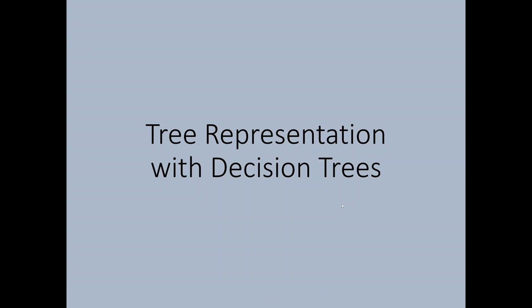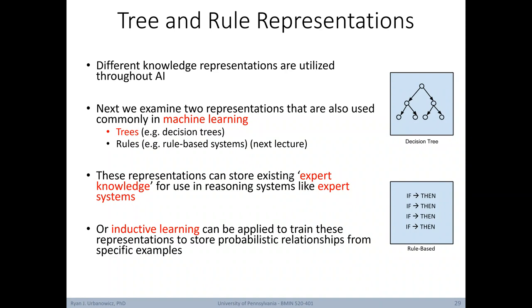Now we're going to leave semantic webs behind and talk about tree representations with decision trees. The remaining representations we'll consider closely in this course are trees and rules. Different knowledge representations are utilized throughout artificial intelligence, but trees and rules are commonly used in both machine learning and expert systems. Both are convenient for storing existing expert knowledge for use in reasoning systems, and in both cases, inductive learning could be applied to train these representations to store probabilistic relationships derived from a training set.